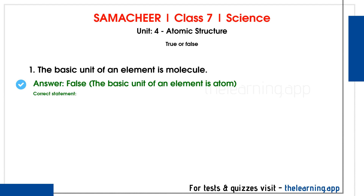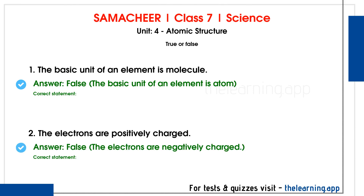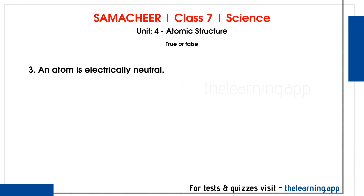True or False. First: the basic unit of an element is molecule — this is false. The correct statement is: the basic unit of an element is atom. Second: electrons are positively charged — this is also false. Electrons are negatively charged particles. Third: an atom is electrically neutral — this is true. In an atom, the number of protons equals the number of electrons, so positive and negative charges cancel, making it neutral.